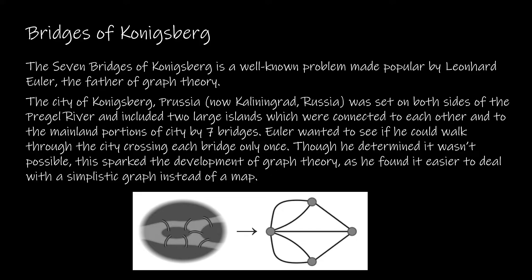What Euler wanted to do is see if he could walk through the city crossing each bridge only one time. This is a zoomed-in portion of the city. What Euler did is make each region a node. The island becomes a node, the other island a node, and the other mainland a node. We connect those nodes with edges, where each bridge becomes an edge connecting them.